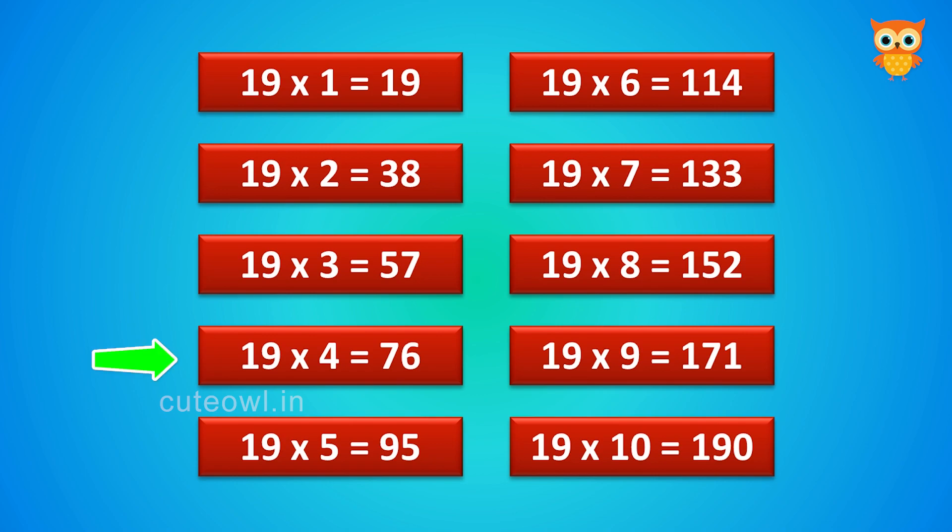19 fours are 76. 19 fives are 95. 19 six are 114. 19 sevens are 133.